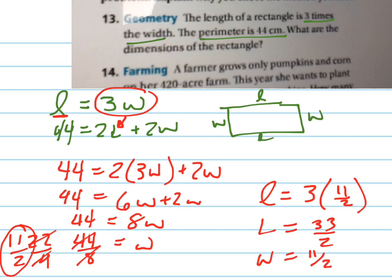Let's check it to make sure it works. I'm going to plug it into this bottom one here. The length is 33 halves. The width is 11 halves. Let's see. Oh look, how nice. Those cancel. What's 33 plus 11? 44. So I know it's right.